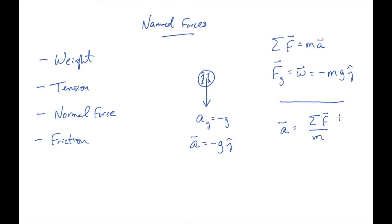Mass is a scalar — it doesn't have a direction associated with it. It's really just a measure of how much stuff you have in an object. The more stuff you have, for a given force, the less acceleration you'll have. In the SI system of units, we measure mass in kilograms. Kilograms tell you how much stuff you have, and give an object the property we call inertia.